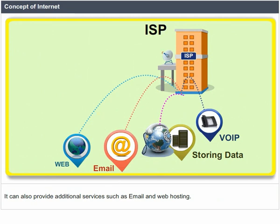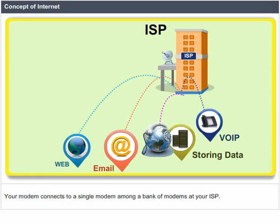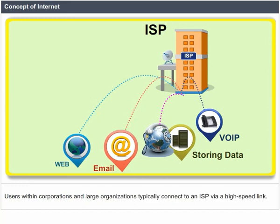You connect to an ISP by using a PC modem to connect to your ISP's modems. Your modem connects to a single modem among a bank of modems at your ISP — this is called a dial-up connection. Users within corporations and large organizations typically connect to an ISP via a high-speed network.